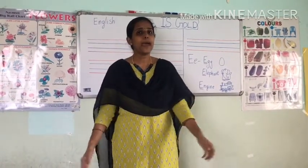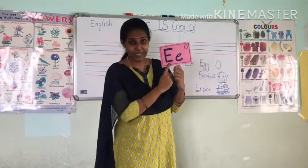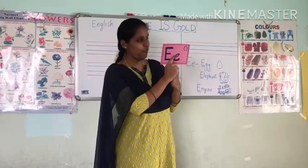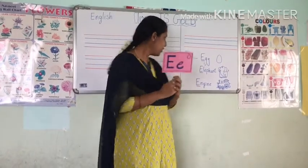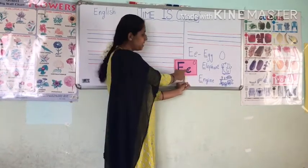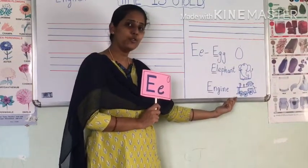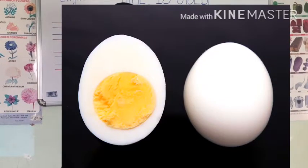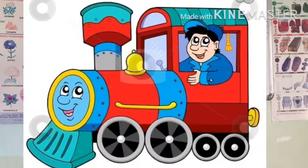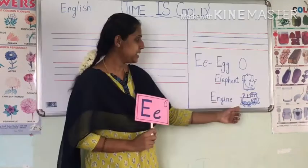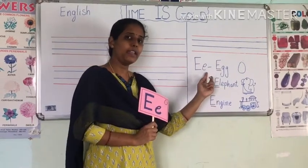So today we are going to see the new alphabet — E. This is capital E and this is small e. E for egg, E for egg. Now listen, the words which start from E: E for egg, E for elephant — you all like elephant, it is very big — E for elephant, E for engine.